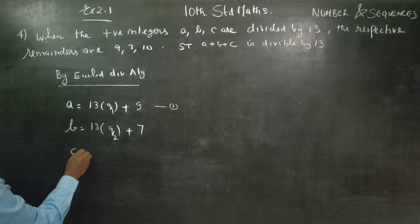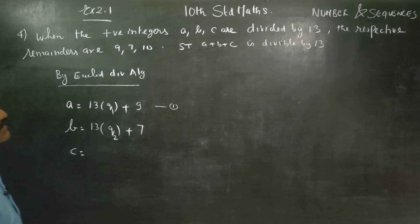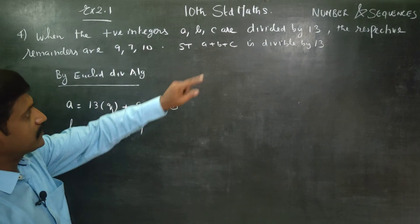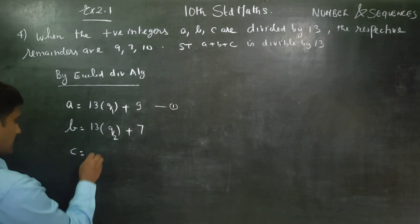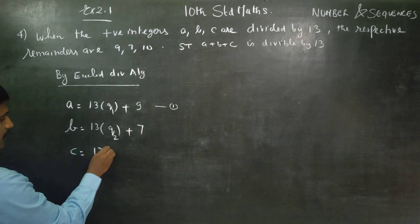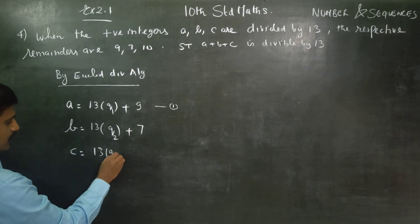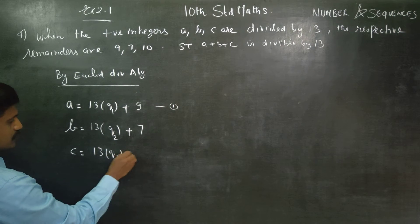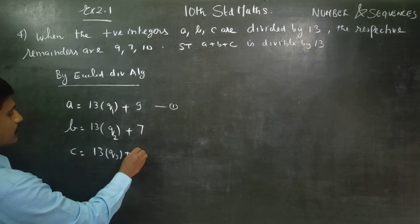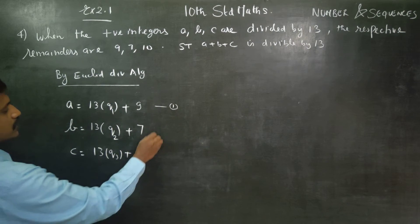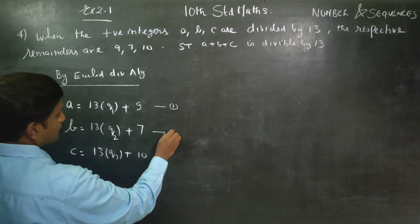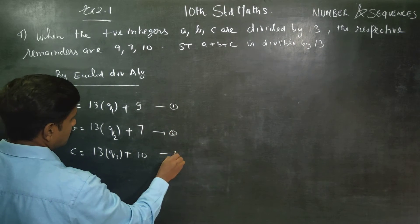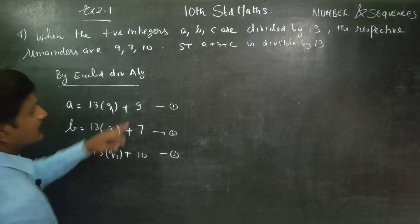In the same way, when C is divided by 13, C equals 13Q3 plus remainder. The remainder is 10. This is equation number 3.